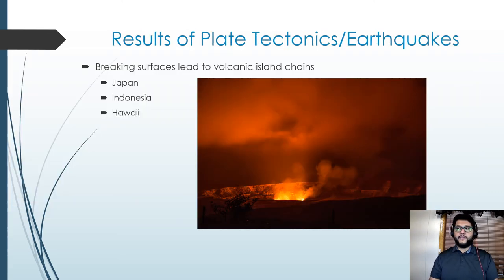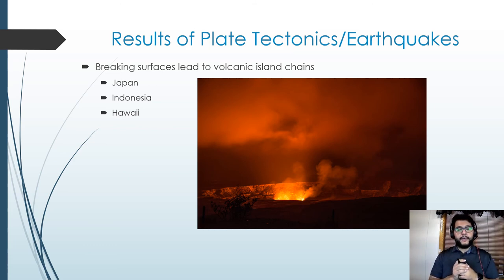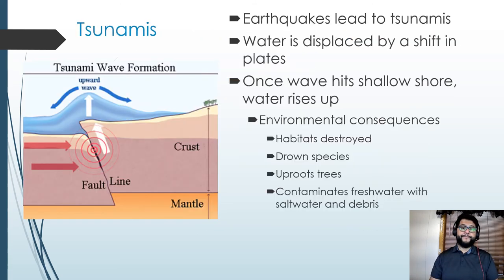Occasionally plate tectonics and earthquakes form island arc chains. Hawaii is one example, but Indonesia and Japan can also be examples of that. These tend to be like pock marks or puncture wounds in the middle of plates, which can cause volcanic activity and earthquakes.